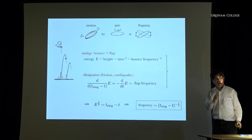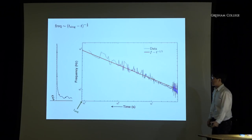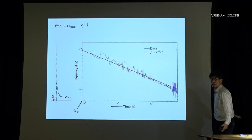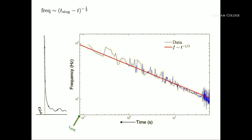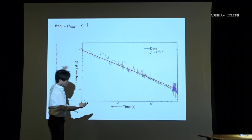A bright young physicist, Ariel Amir at Harvard University, recorded and took data. On a log-log plot of time against frequency, the blue curve shows the recorded sound data, and the red curve is the theoretical minus one-third plot. It goes right through the data — you can't get this kind of beautiful agreement for love or money nowadays. And the time runs from right to left because Ariel is from Israel and Hebrew is written right to left. So the negative one-third law is confirmed.